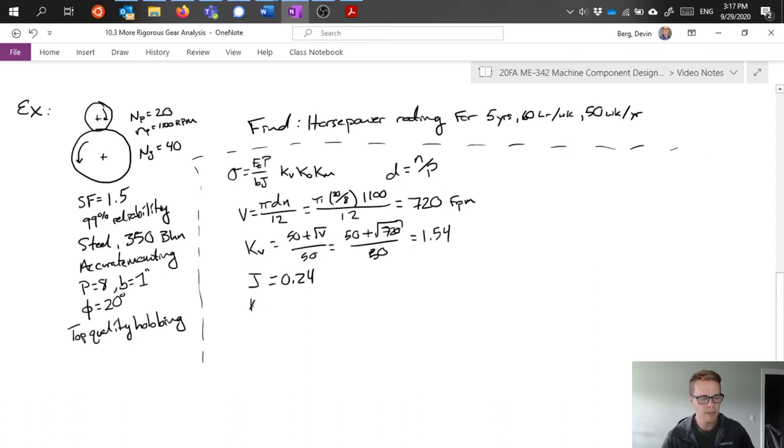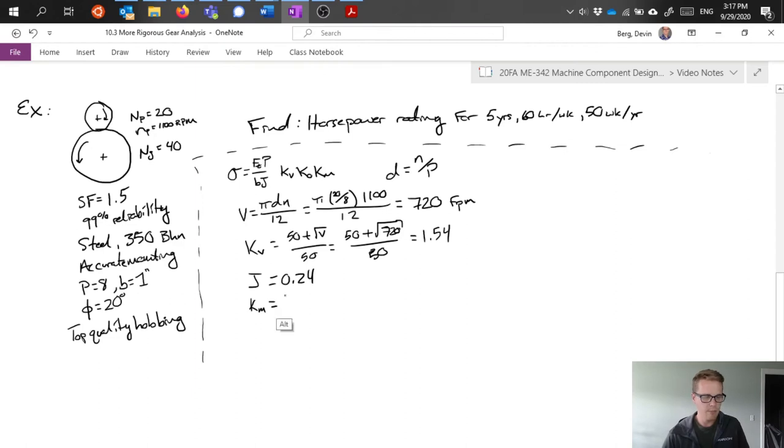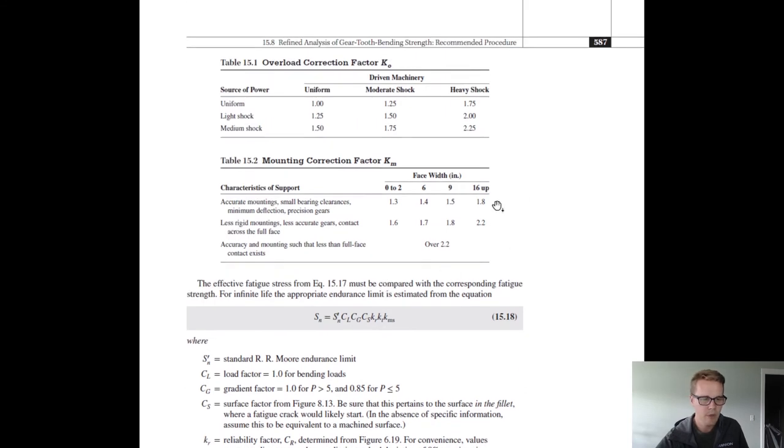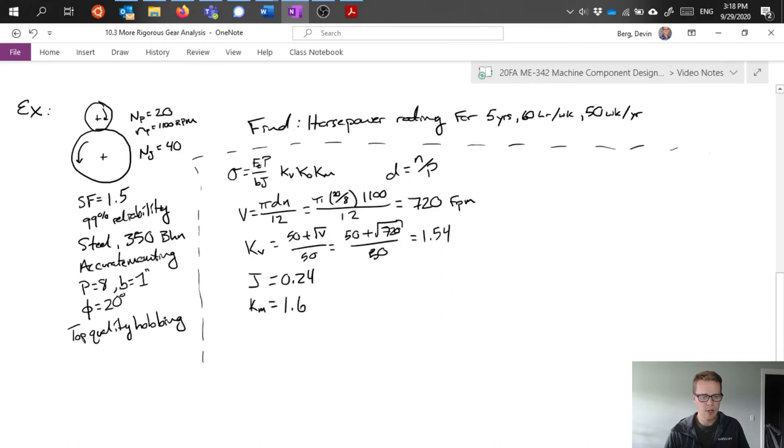Next might work on mounting factor. Mounting factor, we can pull from a table in the textbook. First on face width, we said it was one inch wide. So that falls into this first column. Depending on what style of mountings, it says accurate mountings. So probably somewhere between here and here. Arbitrarily, we might pick the middle value, which gives us a little bit more slack built into it, kind of more conservative as a choice. That's all kind of personal opinion on that.